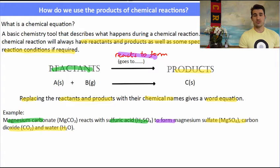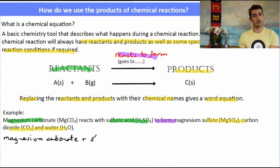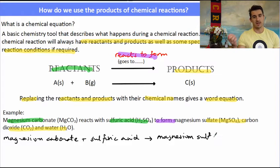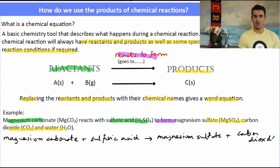Now if we were to write the worded equation for this, it's simply just putting that into an equation. So we have magnesium carbonate plus sulphuric acid, our two reactants goes to, so the arrow or reacts to form. Our products are magnesium sulphate plus carbon dioxide plus water. And we would describe this as the worded chemical equation. For the worded chemical equation, we don't have to include states.